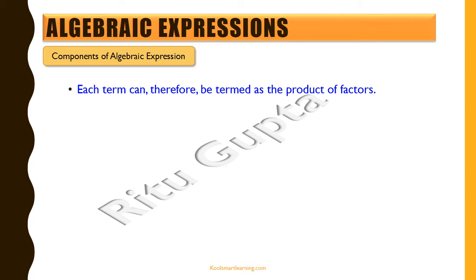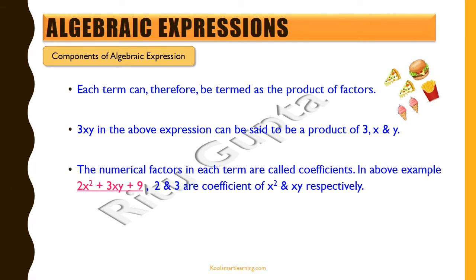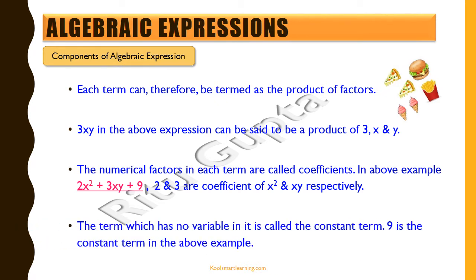Each term can therefore be described as the product of factors. For example, 3xy can be said to be a product of 3, x and y. The numeric factors in each term are called the coefficients. In the expression 2x² plus 3xy plus 9, the coefficients are 2 and 3 for x² and xy respectively. The term which does not have any variable in it is called a constant term — in this expression, 9 is the constant term.